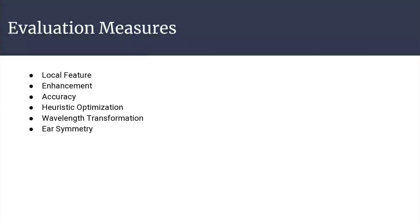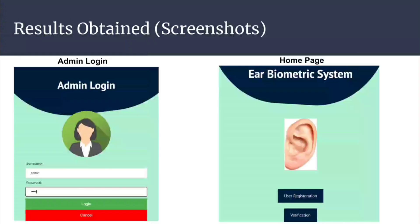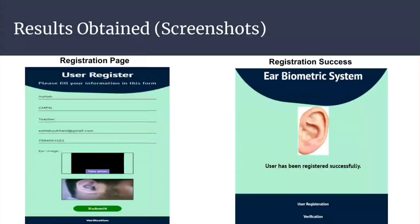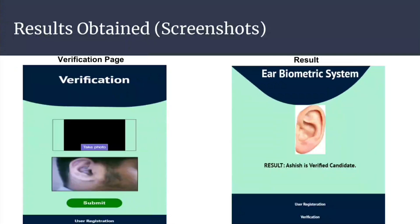The measures on which our system has been evaluated are local features, enhancement, accuracy, holistic optimization, wavelength transformation, and ear symmetry. The results obtained include the admin login page, the home screen with user registration and verification tabs, a registration page with all required fields and ear image input, a registration successful screen, and a verification page which takes only the ear image as input and displays the result.